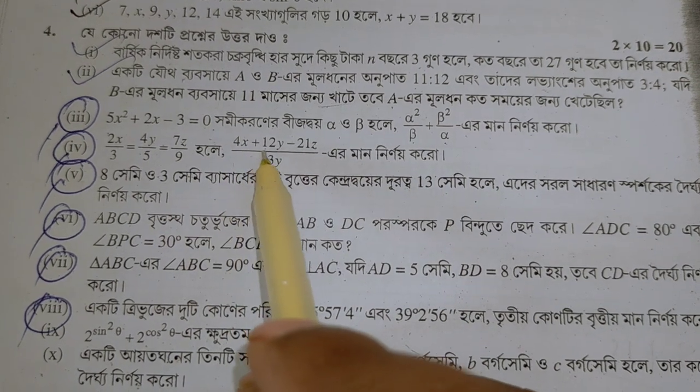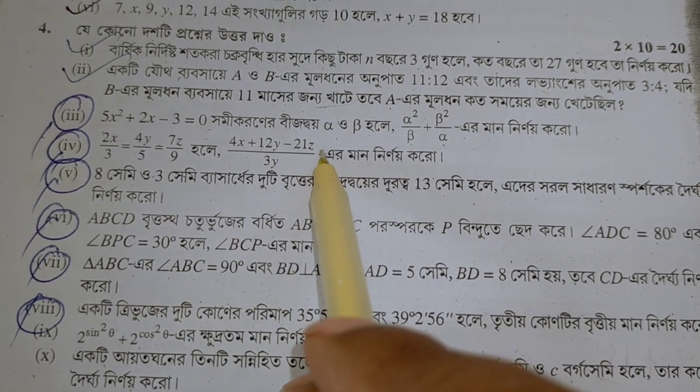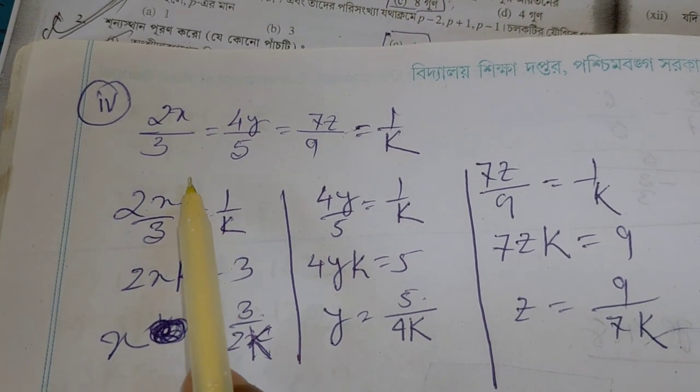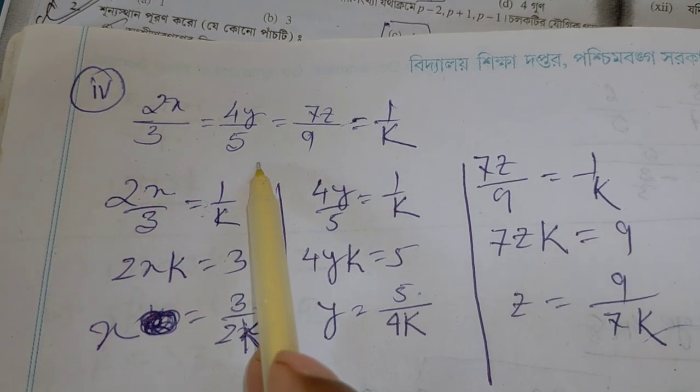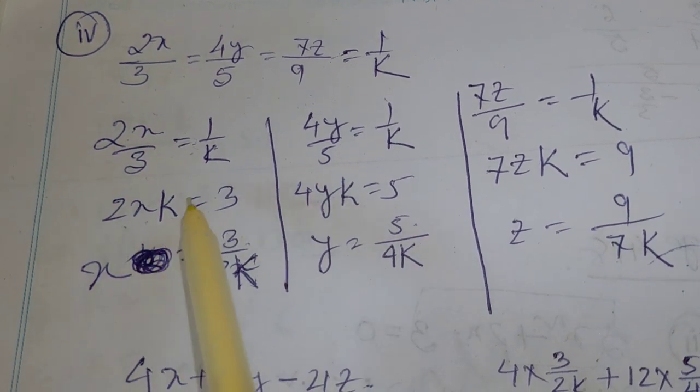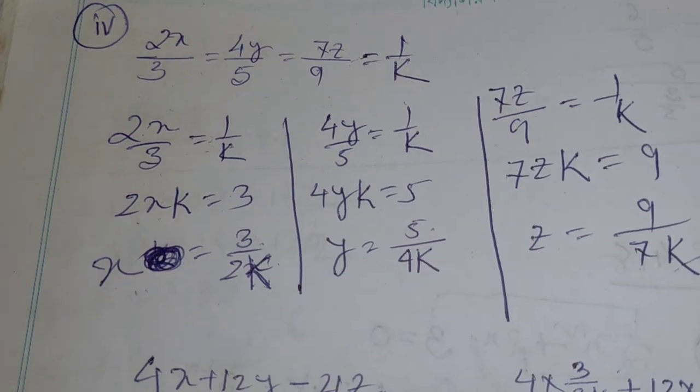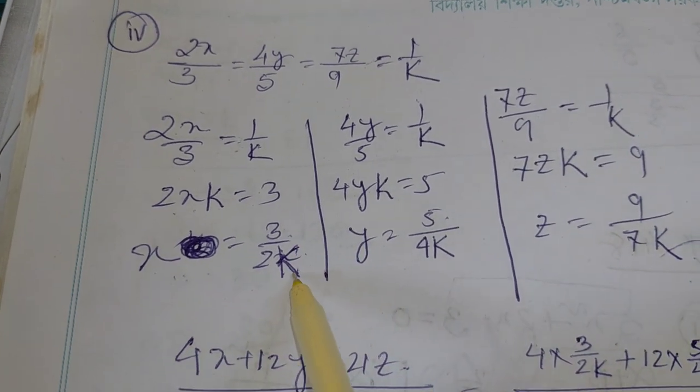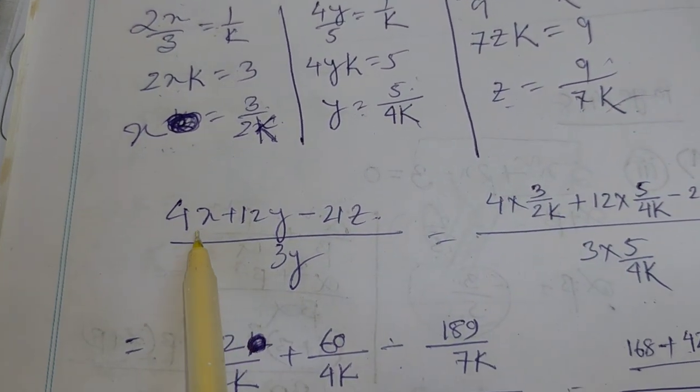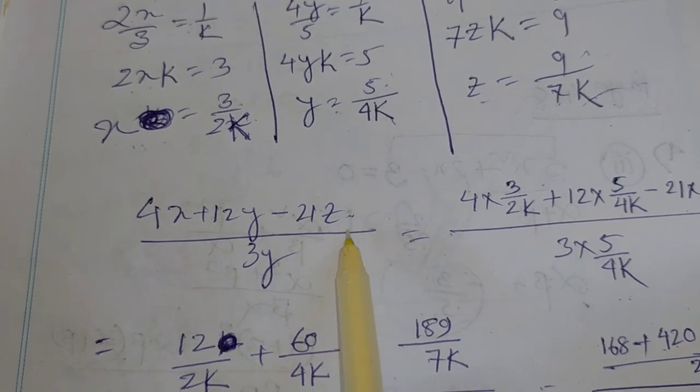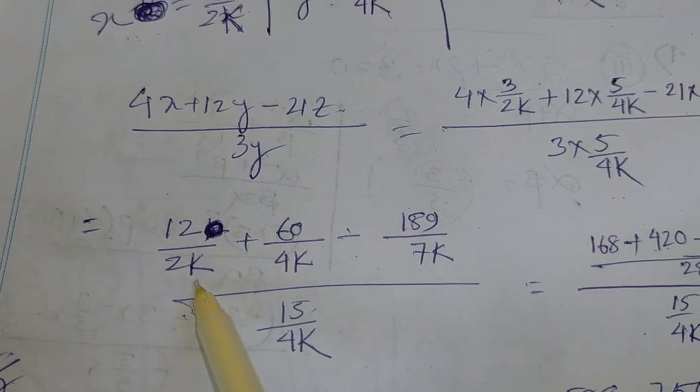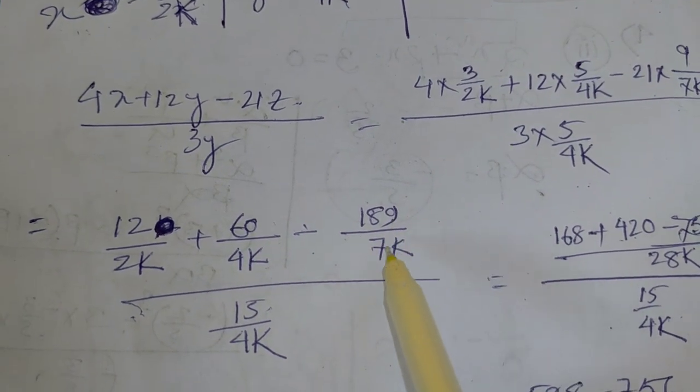4y by 5, 7z by 9, 1 by k. 2x by 3 is 3 by 2k. 5 by 4k, 9 by 7k. 2x by 9, 2 by 3. 3 by 2k, 6 by 4, 9 by 7 by k, 5 by 4k.